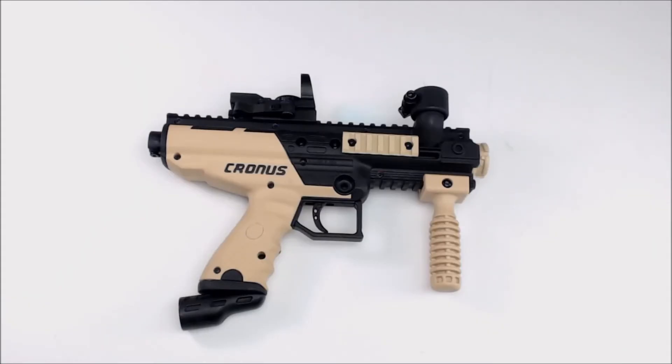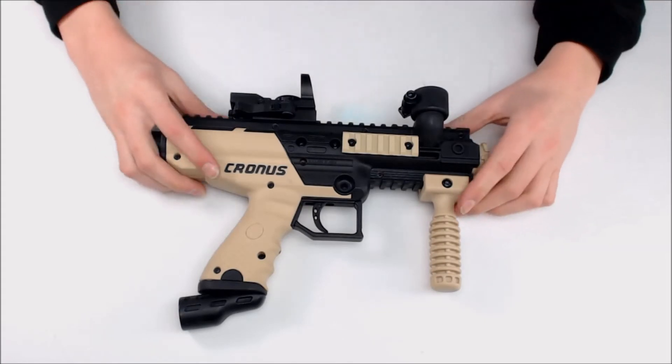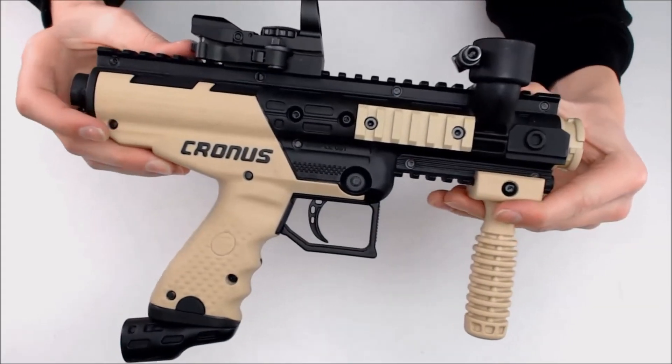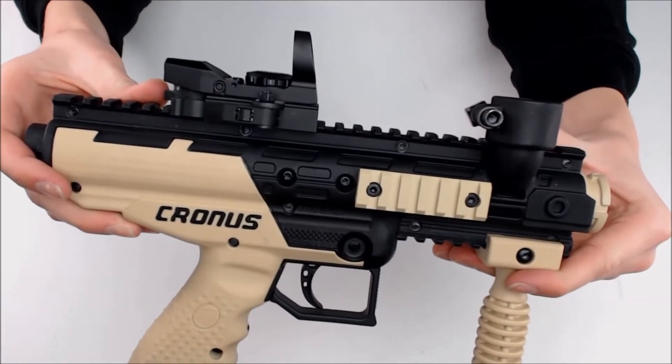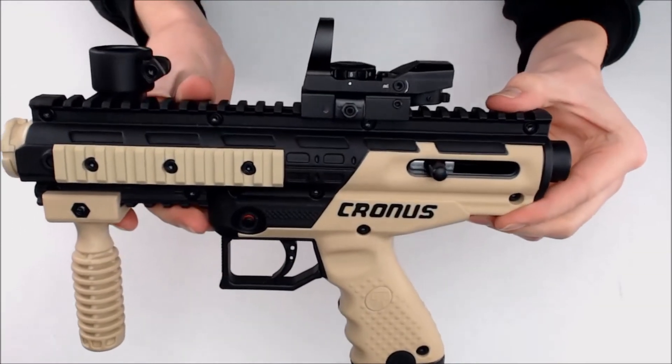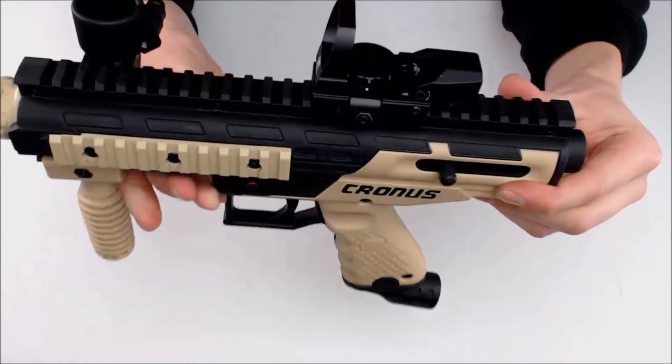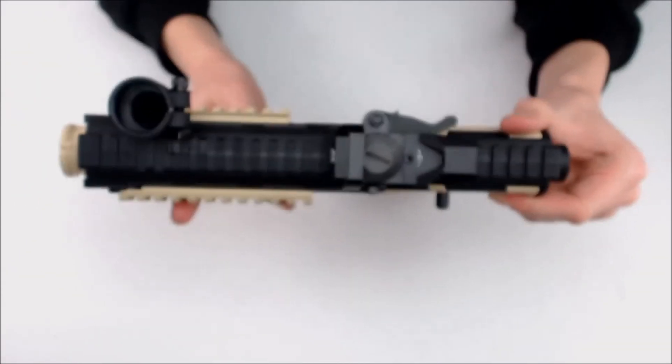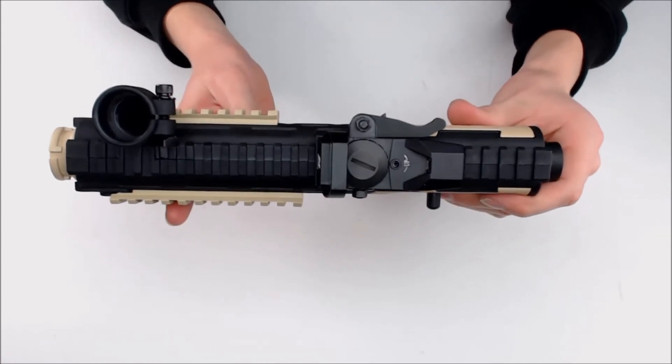Here we have an NC Star Rogue 4 reticle dot sight and it's mounted to this Tippmann Cronus. As you can see it has no interference with the hopper.